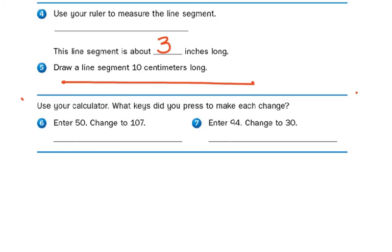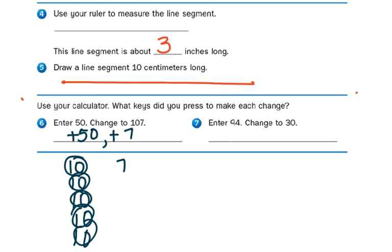Use your calculator. What keys do you press to make each change? You can count up from 50 by 10s: 50, 60, 70, 80, 90, 100, and then 7 more. So it would be plus 50, plus 7. Another way to do it is to take the ending number 107. On your calculator, subtract 50 from it. What is 107 minus 50? 57.